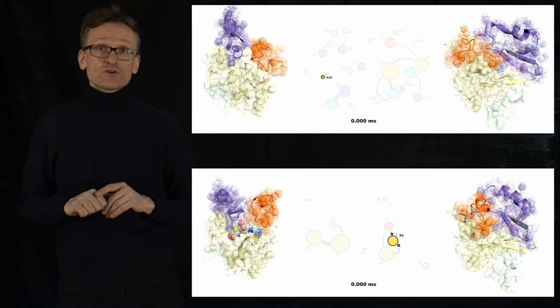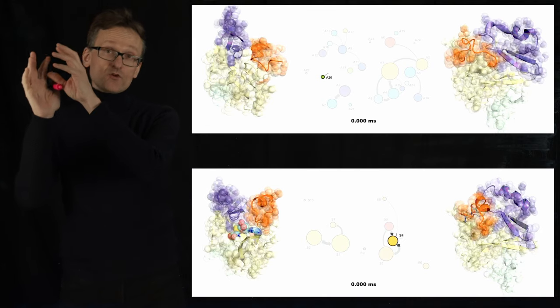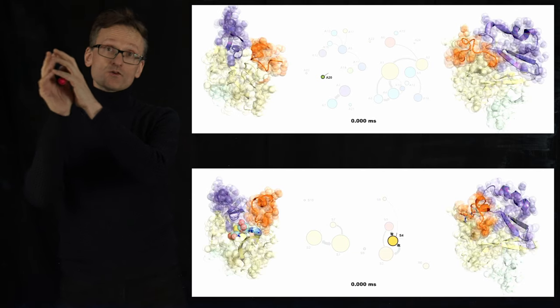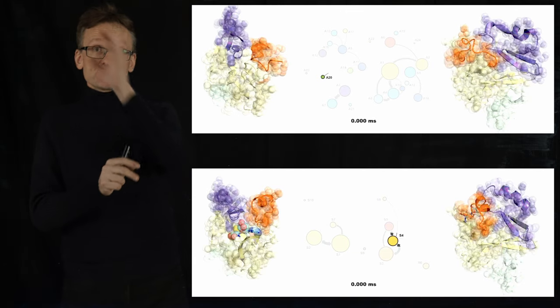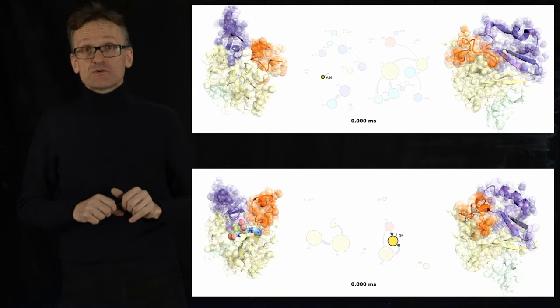At that point you can also start to say, if I am in the open state, what is the probability of going over to the closed state, and vice versa, and calculate the rates between these two states.